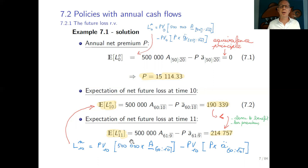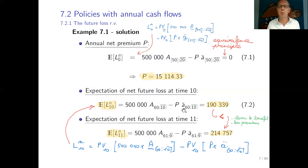Similarly, we calculate the expected loss at time 11, one year later. The actuarial value of the benefit cash flow is now for a person aged 61 with 9 remaining years and a payment of 500,000, minus premiums paid by a person aged 61 for the remaining 9 years. We find 214,775. Importantly, this is calculated before the premium payment, which is why there is a P · ä term — an annuity due — so the premium due at age 61 is still to be paid.